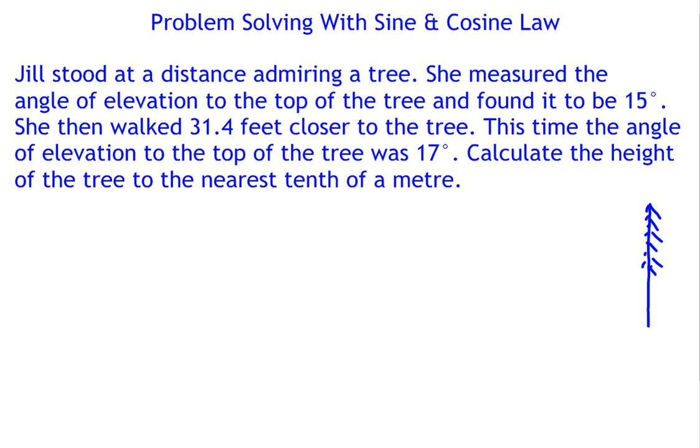She measured the angle of elevation to the top of the tree and found it to be 15 degrees. So here's Jill measuring the angle of elevation. Remember the angle of elevation is measured from the horizon, and it's 15 degrees. She then walked 31.4 feet closer to the tree. So Jill is standing kind of over here and she's going to walk 31.4 feet closer to the tree. So I'm going to put her over here with this distance of 31.4.